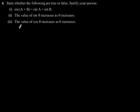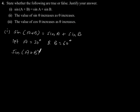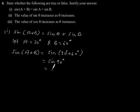Exercise 8.2, question number 4: state whether the following are true or false and justify your answer. First is: sin(a + b) is equal to sin a plus sin b. Let us assume a is equal to 30 degrees and b is equal to 60 degrees. So sin(a + b) is equal to sin(30 + 60) degrees, which is equal to sin 90 degrees, which equals 1.